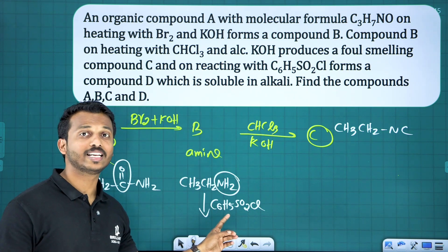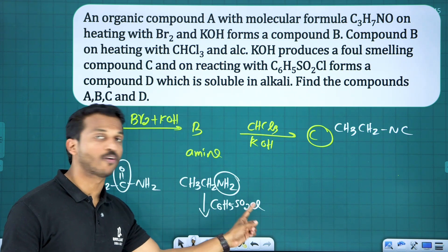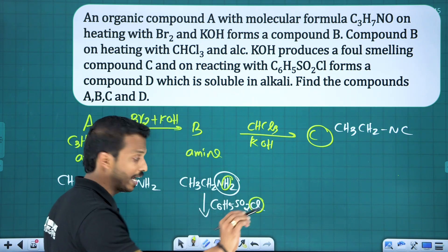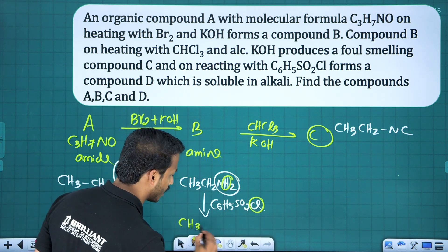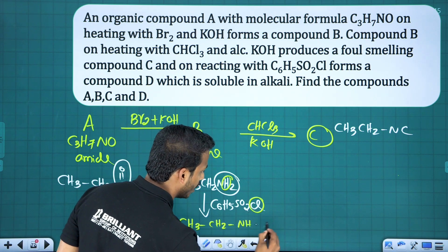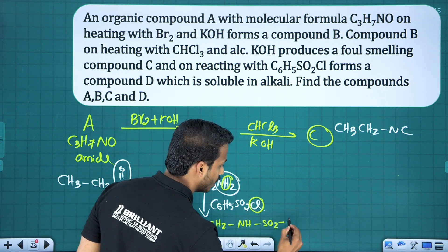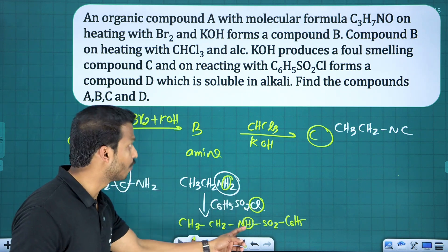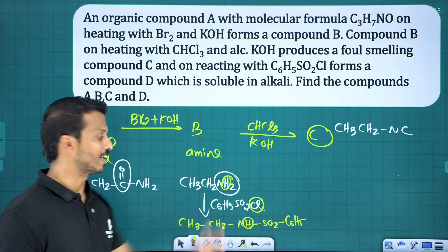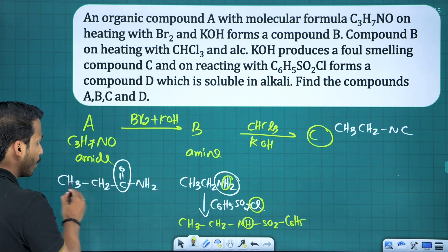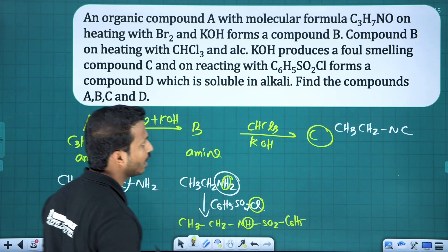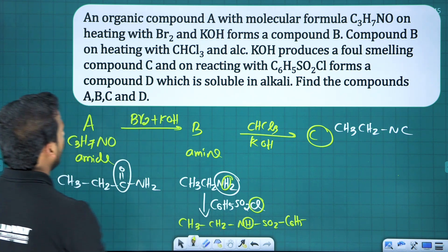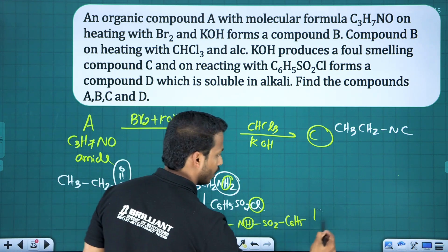In the Hinsberg reaction, HCl is eliminated and we get CH3CH2NH-SO2-C6H5. The hydrogen on nitrogen is acidic, so the compound is soluble in alkali. Summary: A is propanamide, B is ethanamine, C is ethyl isocyanide, and D is N-ethyl benzene sulfonamide.